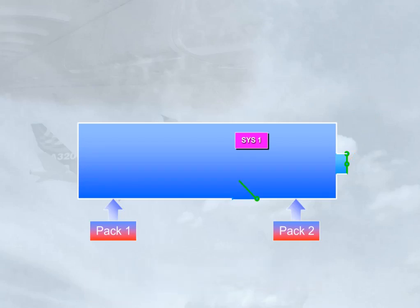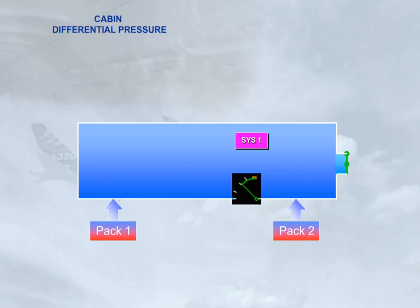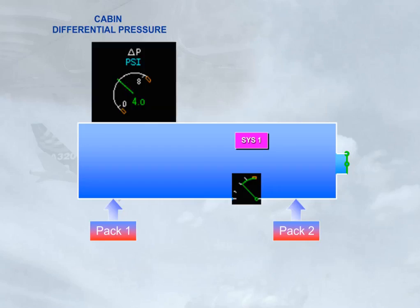Let us look at the operation of the outflow valve for an aircraft in cruise, and what happens to cabin differential pressure, cabin altitude, and cabin vertical speed. We will start with cabin differential pressure. If the outflow valve is closed, or only allowing a small amount of air to escape, then the cabin differential pressure will increase.